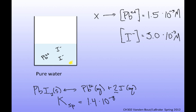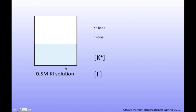Now what I want to look at is what would happen if I put lead iodide not into pure water, but into a solution that already had iodide — a common ion. Let's think about a 0.5 molar potassium iodide solution. I can depict the potassium ions as little blue dots — there are a lot of them since the concentration is quite high. There's also a lot of iodide, shown as little red dots, with one iodide ion for every potassium ion.